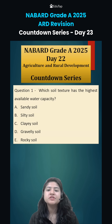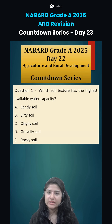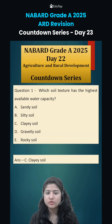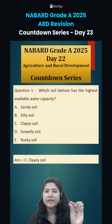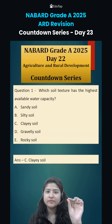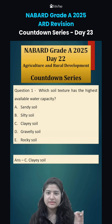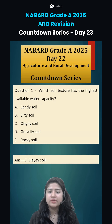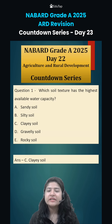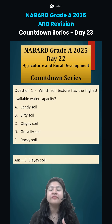Question number 1 was: which soil texture has the highest available water capacity? The correct answer is clayey soil. The soil particles are very minute, very small, and because of that they are able to hold water in a much better manner in comparison to the other cases. Silty soil also can hold water, but when you have to choose one and there is a comparison,